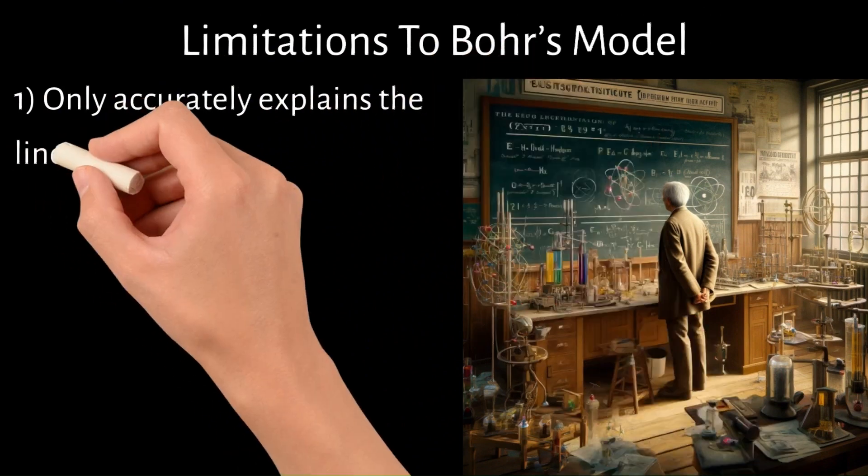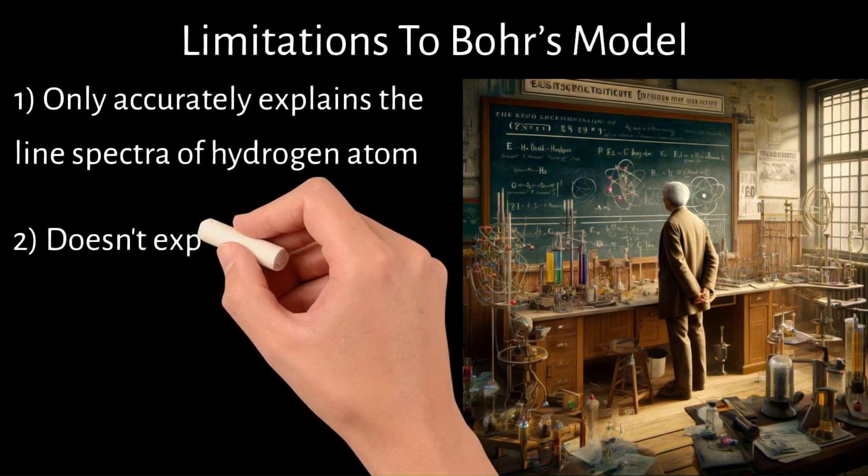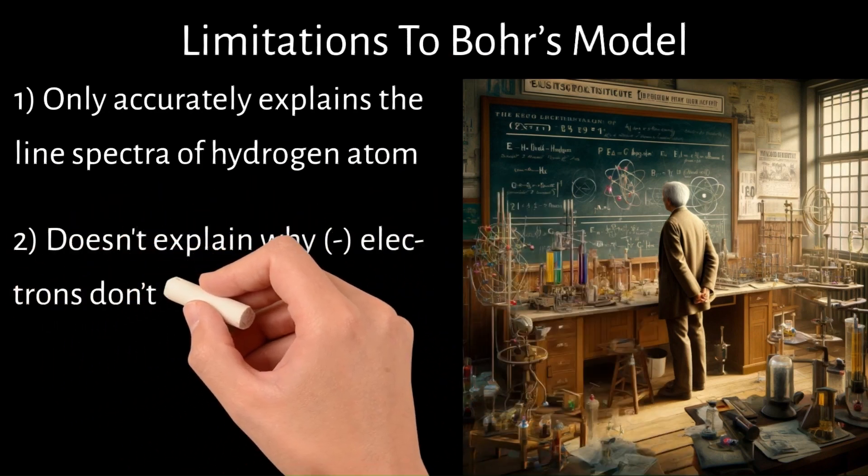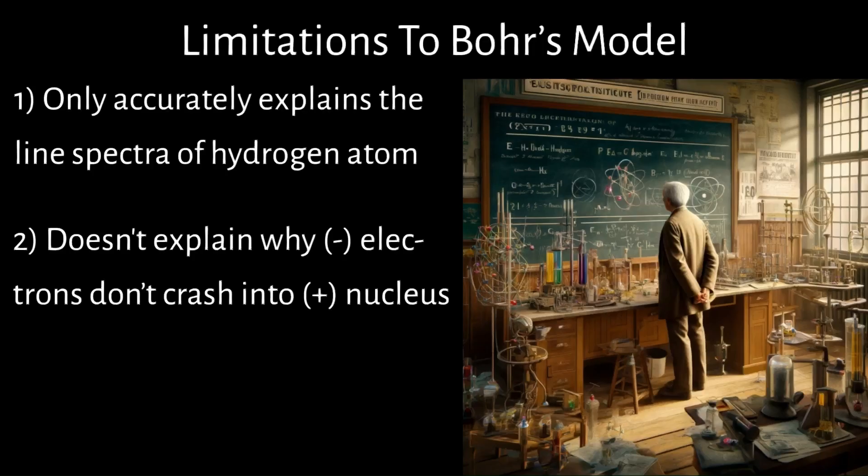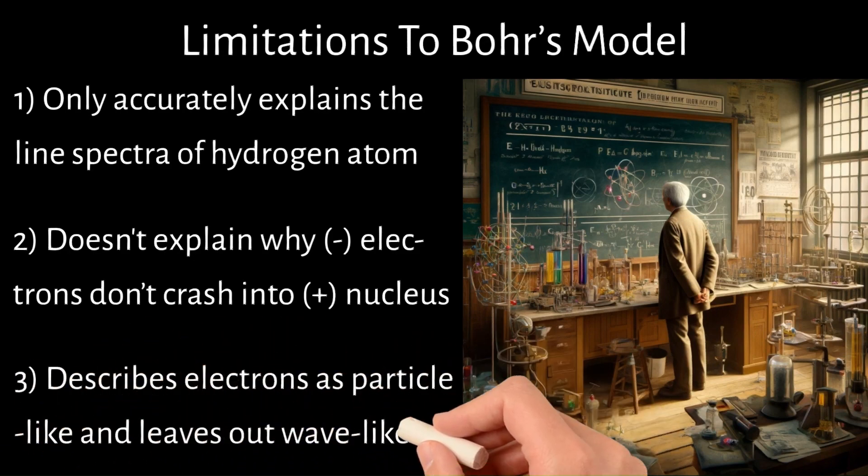First, it only accurately explains the line spectra of the hydrogen atom, with the explanation of other atoms not fitting so well. Second, it doesn't explain why the negatively charged electrons don't crash into the positively charged nucleus. Lastly, it describes electrons as particle-like and leaves out their wave-like nature.